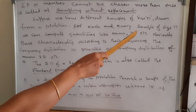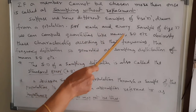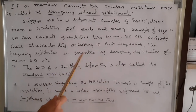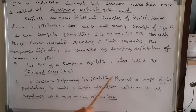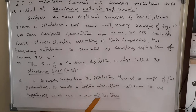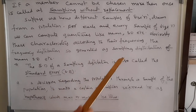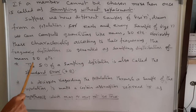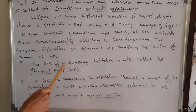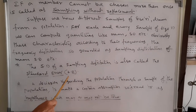Suppose we have different samples of size n drawn from a population. For each and every sample of size n, we can compute quantities like mean and standard deviation. These characteristics are arranged according to their frequencies. The frequency distribution so generated is the sampling distribution of the mean, standard deviation, etc. The standard deviation of the sampling distribution is also called the standard error.